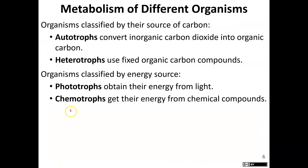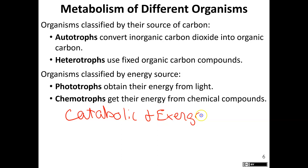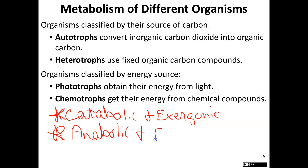To summarize: catabolic and exergonic go hand in hand, and anabolic and endergonic go hand in hand. I'll stop this video here and get into different organisms based on their energy and carbon source in the next video. Bye.